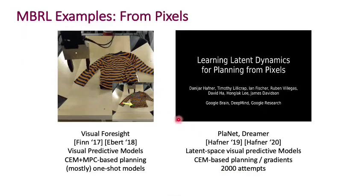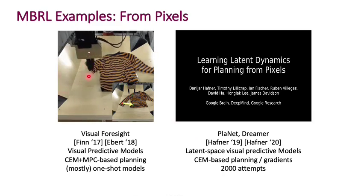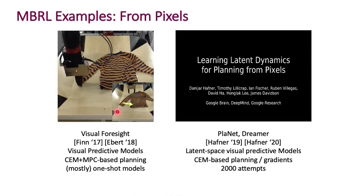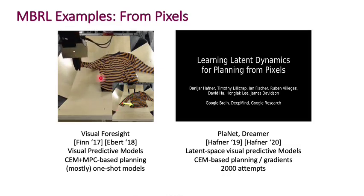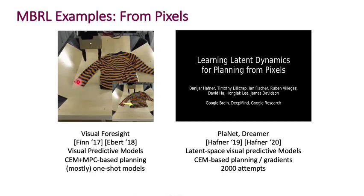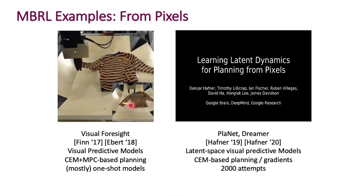Here are some examples of learning from pixels — purely given the image representation of the scene and learning the dynamics in image space, because you have a deformable object that's not easy to represent in a lower-dimensional representation. You are learning the task of folding cloth, trying to take the hand of the shirt and place it near a specified point, as shown in the bottom right.